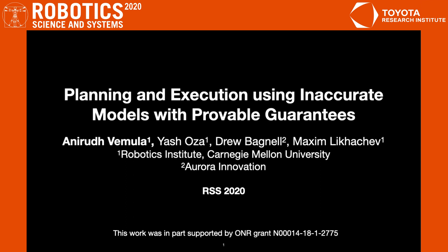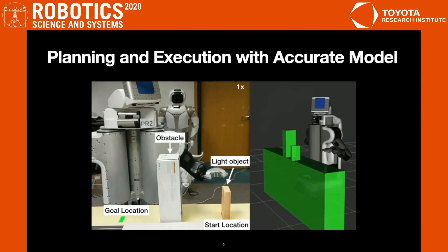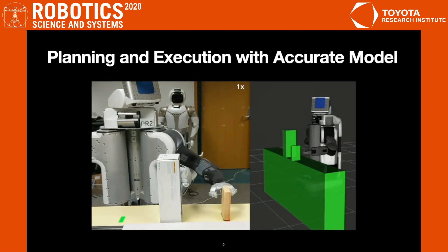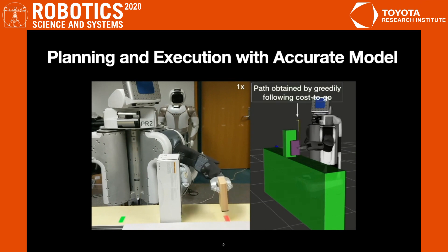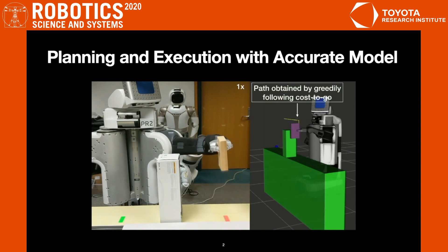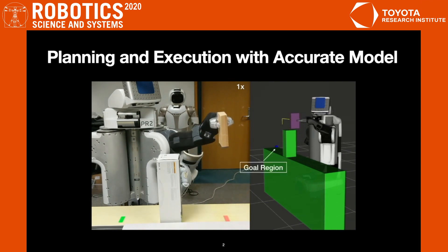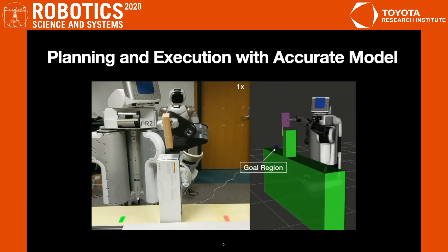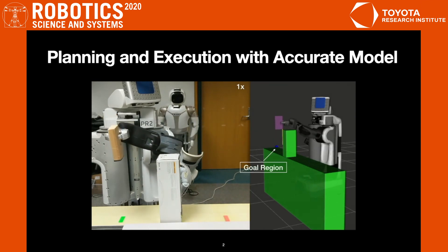With access to accurate models, we can achieve successful planning and execution, like in this example where PR2's objective is to pick up a light object from the start location and move it to the goal location while avoiding collision with the obstacle. If we have an accurate dynamical model that captures the weight of the object, the location of the obstacle, and other relevant parameters exactly, then our planner comes up with a path that avoids the obstacle and our execution is successful.